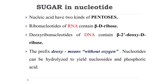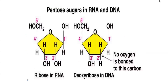Nucleotides can be hydrolyzed to produce nucleoside and phosphoric acid. Looking at the pentose sugars: in ribose sugar, at the 2'-carbon you can clearly see there is an -OH group. But in deoxyribose, there is no oxygen bonded to that carbon — that is why it is called deoxyribose.